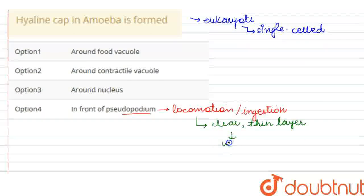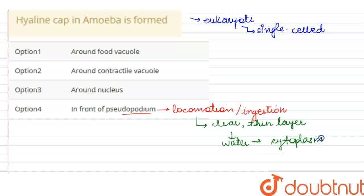This layer looks like water, but actually, this layer is cytoplasm present. And this layer protects the pseudopodium. This is called the hyaline cap.